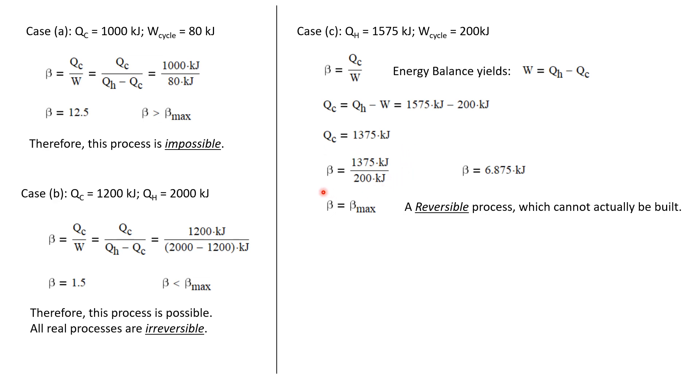Now I can calculate beta. Beta is QC, which is 1375 kilojoules, divided by W, which is 200 kilojoules. I get that beta is 6.875. This beta is exactly equal to beta max, so this case is a reversible process. We can imagine a reversible process, but we cannot actually build it.